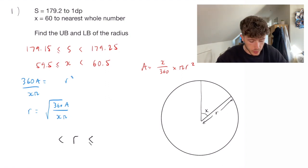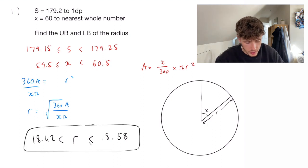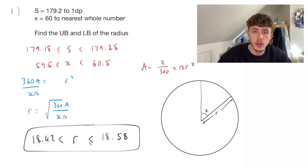Now putting that in the calculator gave me 18.58. And if I repeat the same but with the opposite values, this is giving me 18.42. And that is the upper and lower bound of our radius. Let me know how you got on in the comments and if there's any particular topics you want me to do next. Thank you very much for watching and I hope that helped.